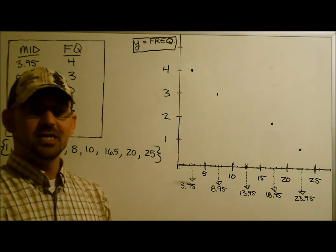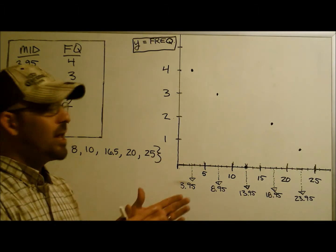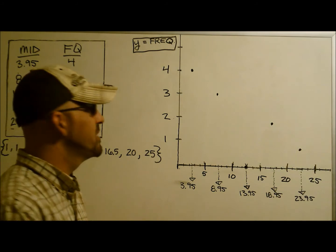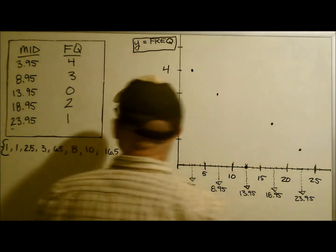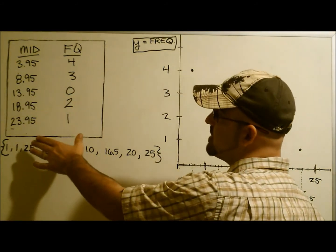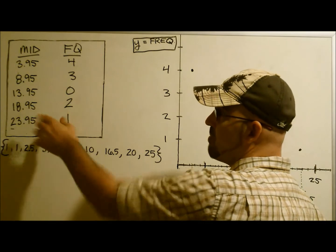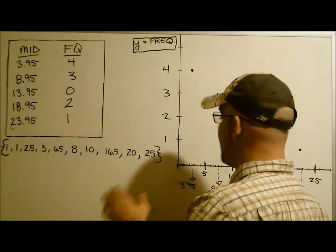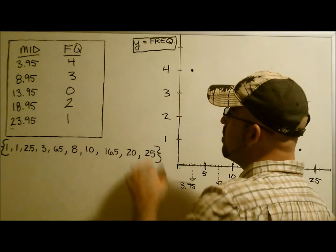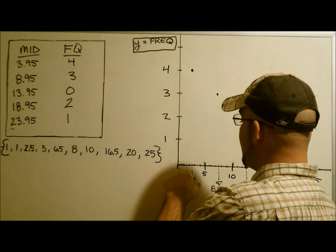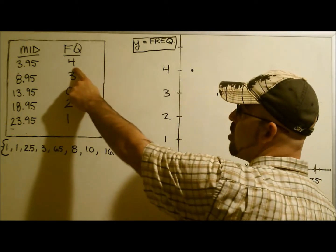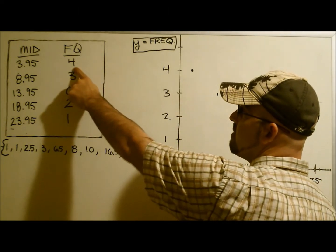Constructing a regular frequency polygon is real easy. Let me show you how to do it. First, we take from our frequency table all the midpoints and we place them on our x axis. Then, with those midpoints, we use the according frequency.